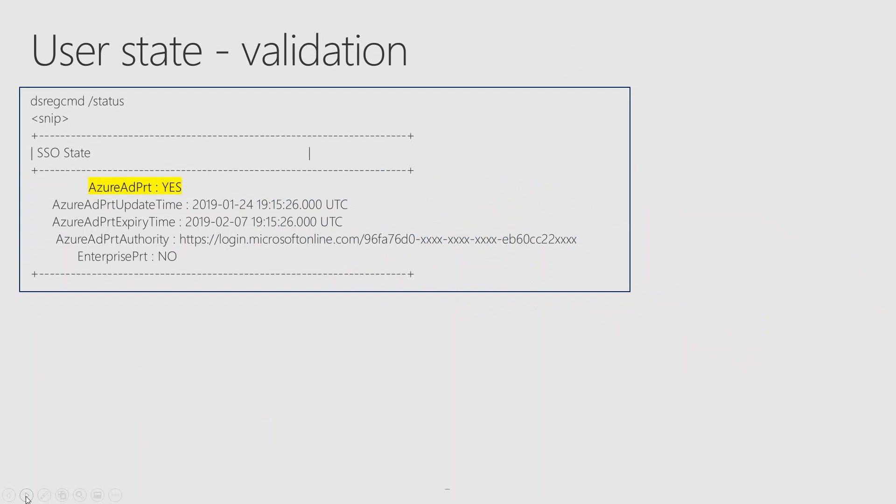It's interesting how much really happens with a seamlessly simple action such as logging in from the Windows lock screen. There are two ways to validate that authentication has succeeded and a PRT was issued to the user. First, you can run dsregcmd /status and check the Azure AD PRT output. If it says yes, then the user was issued a PRT. You can also see the issue time and expiry time in the output.